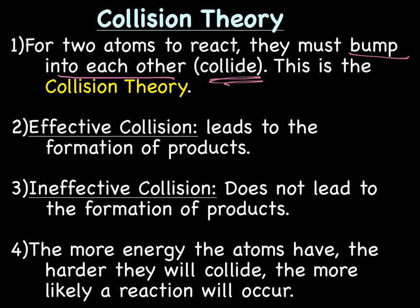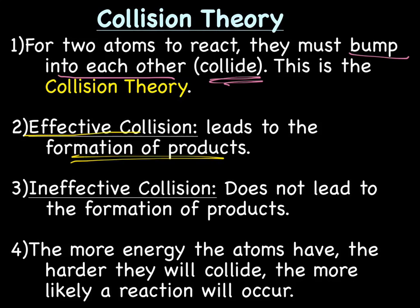There are two types of collisions: an effective collision and an ineffective collision. An effective collision leads to the formation of products. An ineffective collision — meaning it's not really working — does not lead to the formation of products.